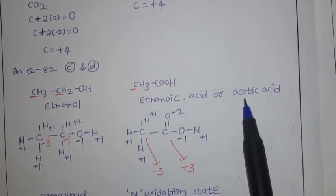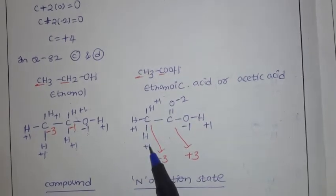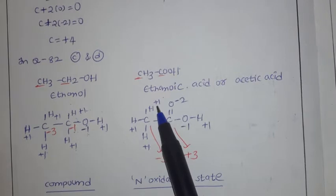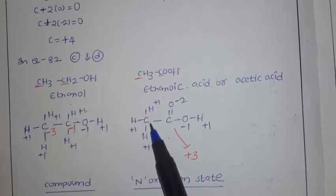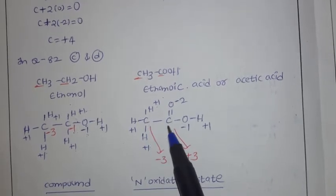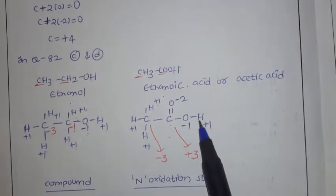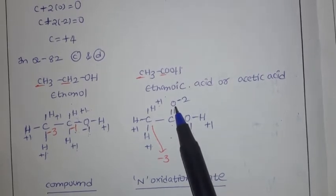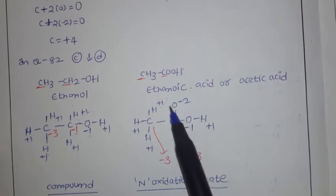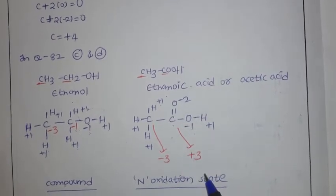Next, ethanoic acid (acetic acid, CH3COOH). For the CH3 carbon: 3 hydrogen atoms each give plus 1, so this carbon has oxidation number minus 3. For the COOH carbon: hydrogen is plus 1, one OH oxygen net minus 1, and the double-bond oxygen minus 2 — total minus 3 around this carbon. So carbon balances with plus 3. The two carbons in ethanoic acid have oxidation numbers minus 3 and plus 3.